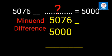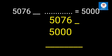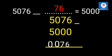The minuend is 5,076 and our difference is 5,000. We can subtract: 6 minus 0 is equal to 6. Then 7 minus 0 is equal to 7. Then 0 minus 0 is equal to 0. And 5 minus 5 is equal to 0. So we have got the answer: 76.